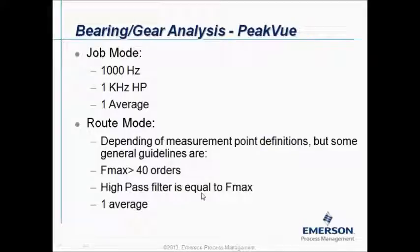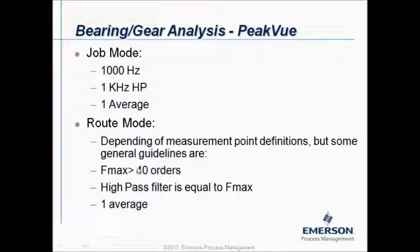A high pass filter is normally more or less equal to the Fmax. So if your Fmax is 1000 Hz the high pass filter will be 1000 Hz. If the Fmax is 2000 Hz the high pass filter will be 2000 Hz. And in peak view measurements, very importantly, we will always collect only one average.